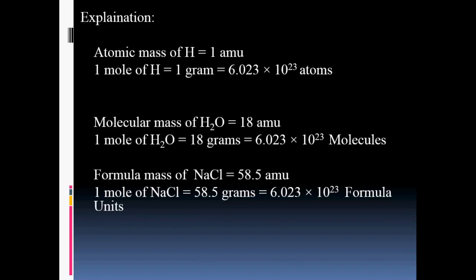When we express the atomic mass of hydrogen in terms of grams, then it becomes equal to one mole. So we can say that one mole of hydrogen is equal to 1 gram, which is equal to 6.023 × 10²³ atoms.